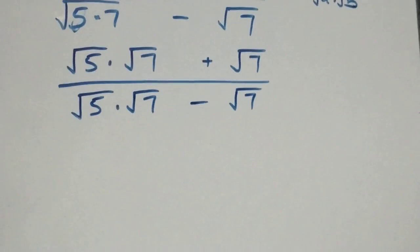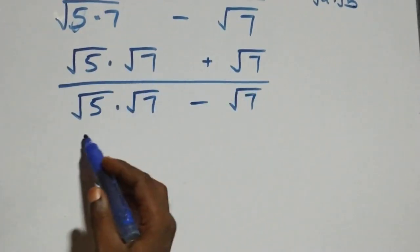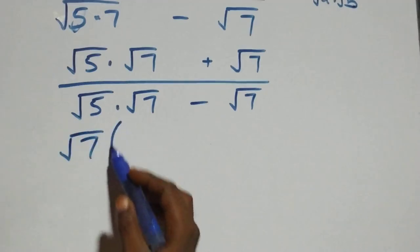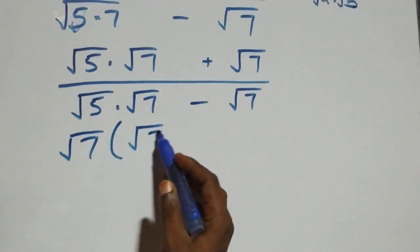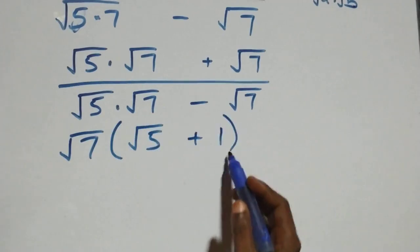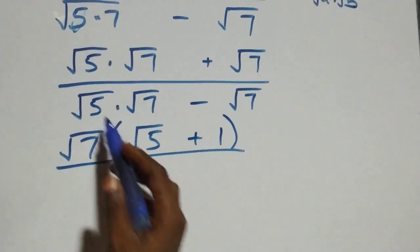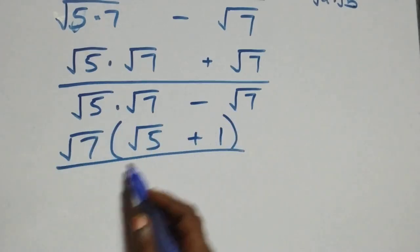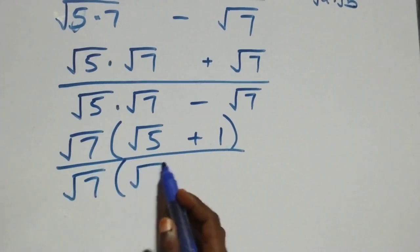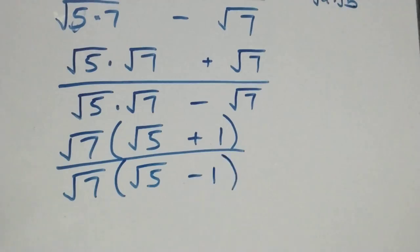The next step: root seven is common from what we have. We can factor it out and we have root seven into bracket root five, then plus one left inside here, divided by — also here — root seven is common, we have root seven into bracket root five minus one left here.